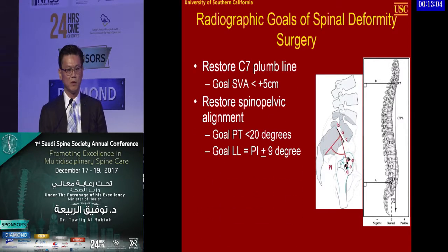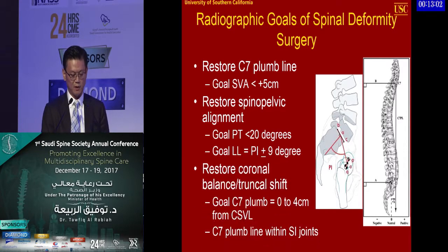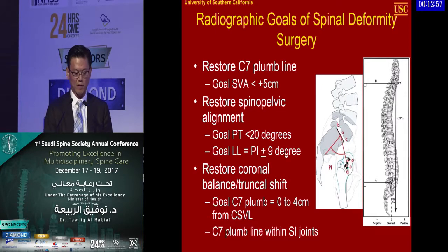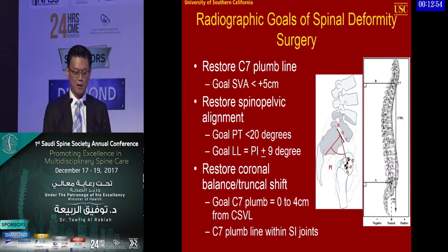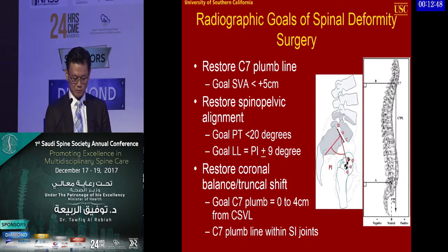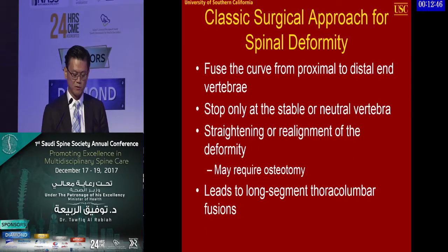These principles have been established mostly by Glassman et al. and Schwab's studies, where a series of radiographic parameters correlate with optimal outcomes for spinal deformity surgery — restoring SVA, ensuring spinal-pelvic alignment is well aligned, and restoring coronal balance.